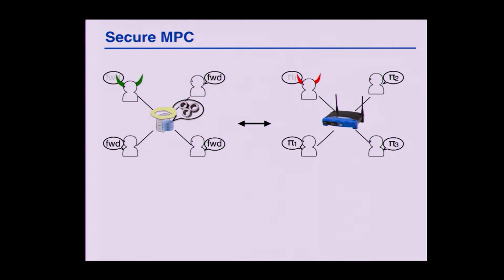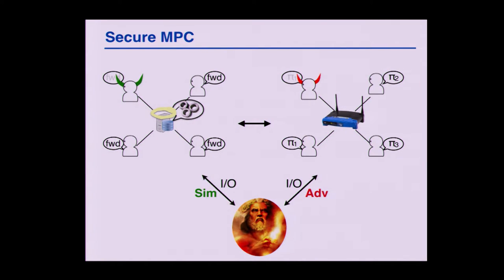Very briefly — you already saw this slide in several versions in this session — security of multi-party protocols is defined via the real-ideal paradigm. In the real world, we have the parties that execute their protocols, and there is an adversary that corrupts a party and uses him to cheat the other parties. In the ideal world, the parties have access to a fully trusted functionality that takes input from the parties. The parties are dummy forwarders that give input to the functionality, which computes whatever they want and gives them the output. The corrupted party is controlled by a simulator whose goal is to make this ideal setting indistinguishable from the real setting for any such environment.